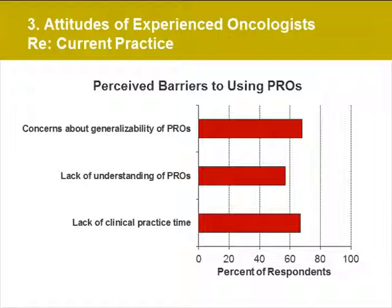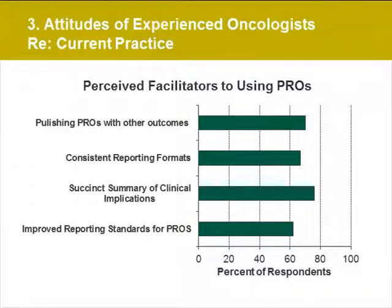Clinicians also expressed a lack of understanding of many of these measures and a lack of clinical practice time in seeking out PRO results from clinical trials when not included with the primary clinical trial report. Clinicians indicated that several things would be of assistance: publishing PROs simultaneously with other outcomes and not in a separate publication, using consistent reporting formats, provision of a succinct summary of clinical trial implications, and more consistent reporting standards would all facilitate clinicians' uptake and use of PRO data in clinical practice.